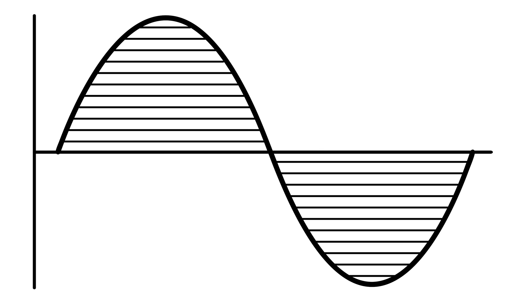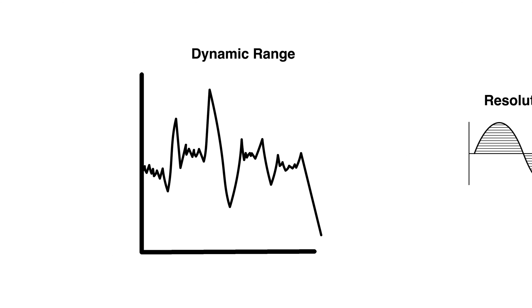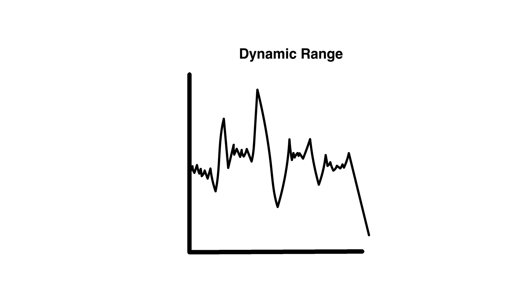But the bit depth doesn't only affect the resolution but also the dynamic range between the loudest and the quietest points possible. On the top of a digital system we have a limit of 0 dB full scale. A bit depth of 16 bit will provide us with a dynamic range of 96 dB.